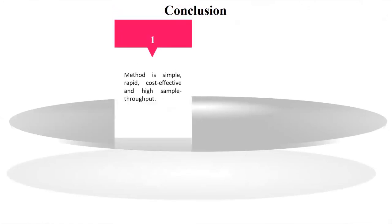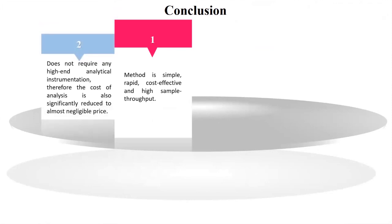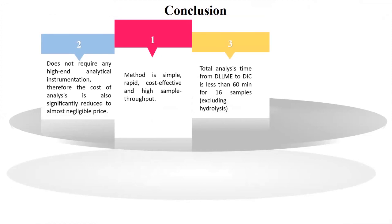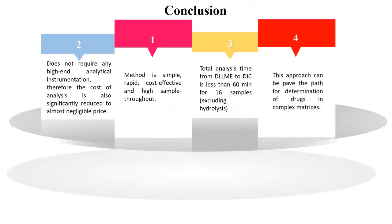In conclusion: first, the method is simple, rapid, cost-effective, and has high sample throughput. Second, it does not require any high-end analytical instrument, and the cost of analysis is significantly reduced to nearly negligible. Third, the total analysis time from DLLME to DIC is less than 60 minutes. Finally, this approach can serve as a pathway for the determination of drugs in complex matrices. Thank you.